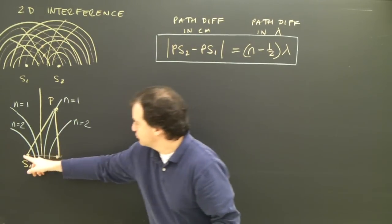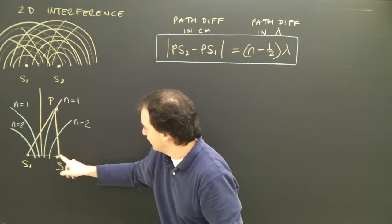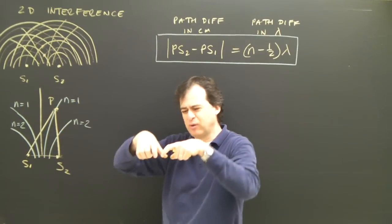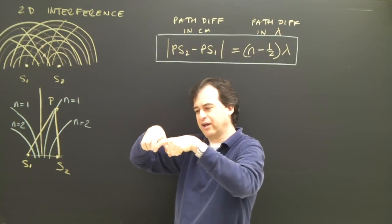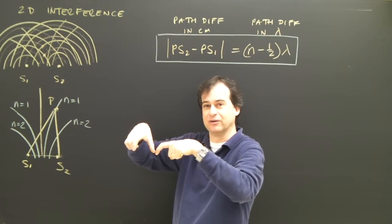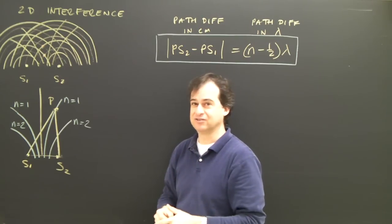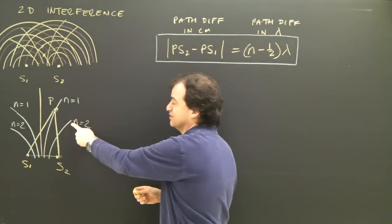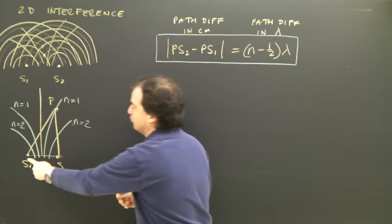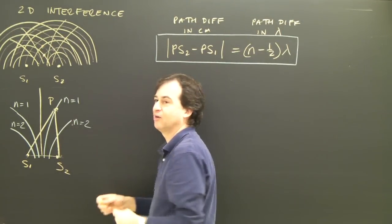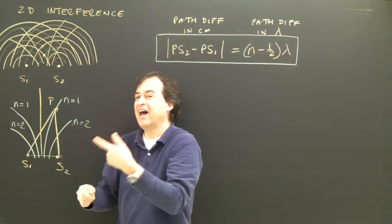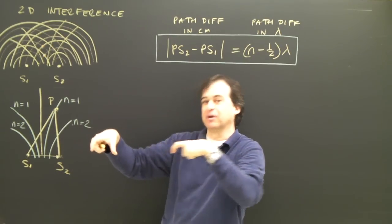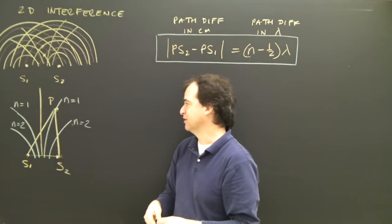The path difference from source 1 to P versus source 2 to P on the first nodal line is half a wavelength. If one wave travels half a wavelength longer than the other, the two waves arrive out of phase and cancel each other. On the second nodal line, the wave must have traveled one and a half wavelengths further — still out of phase, but by one and a half wavelengths.